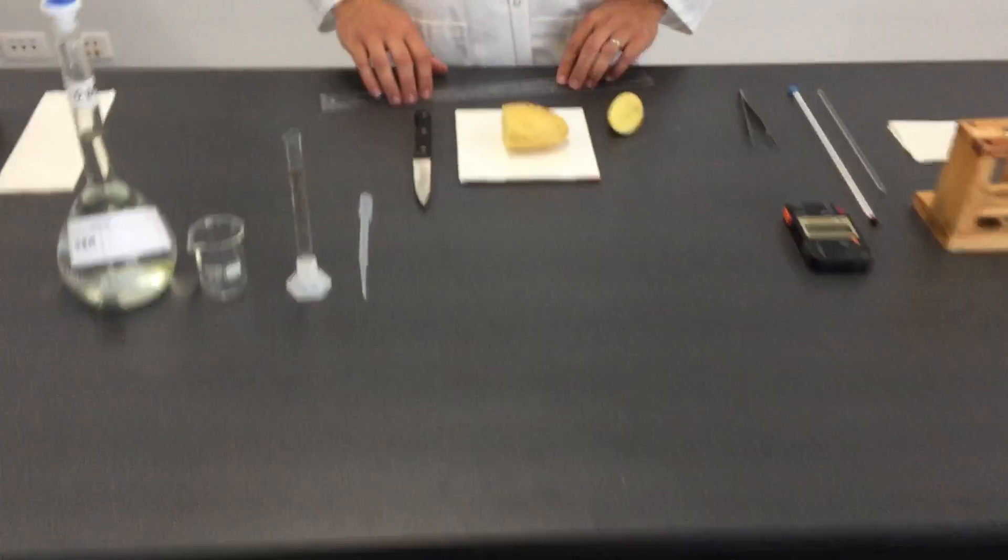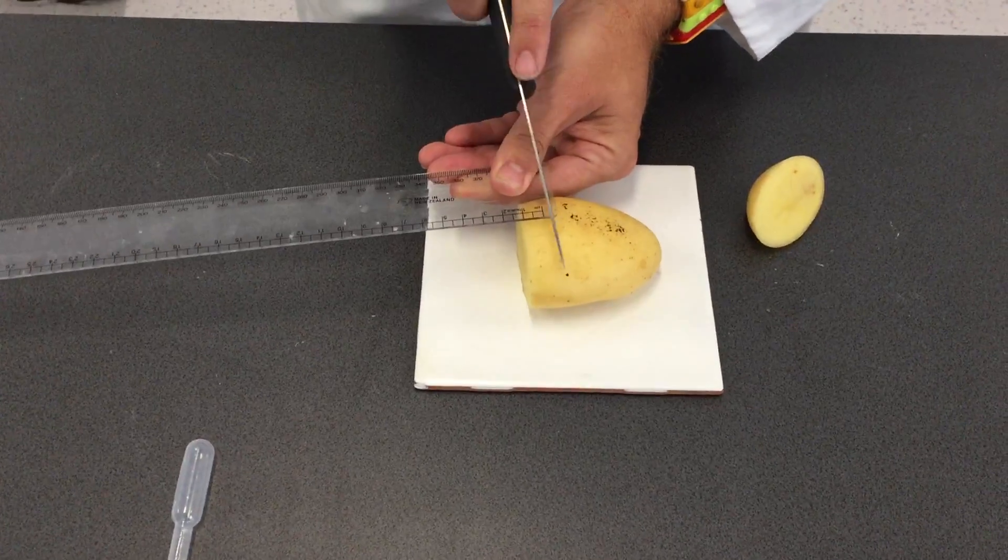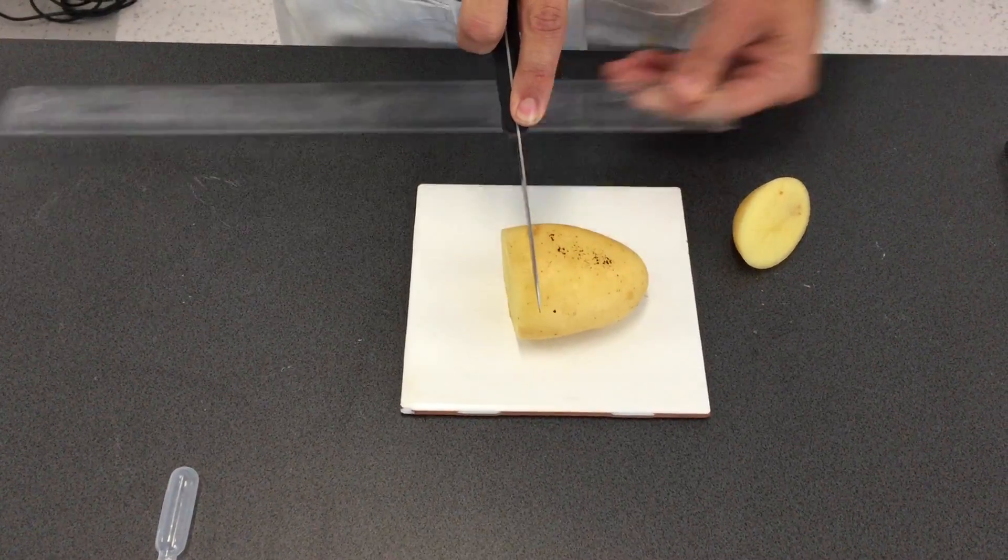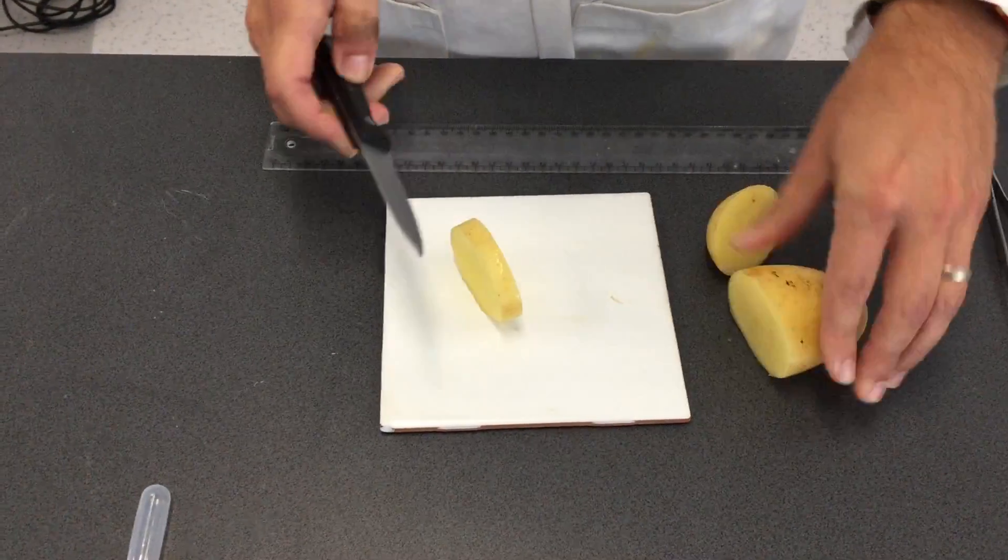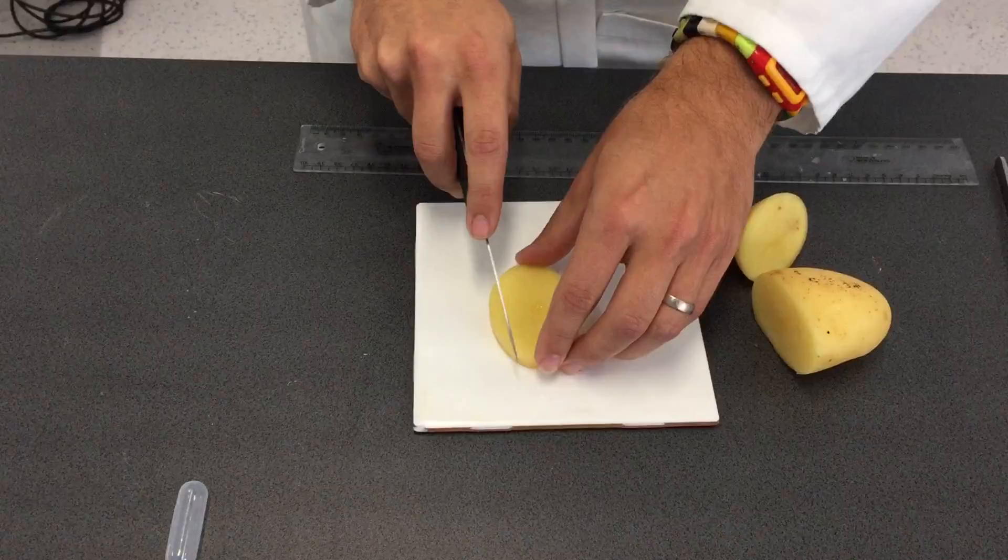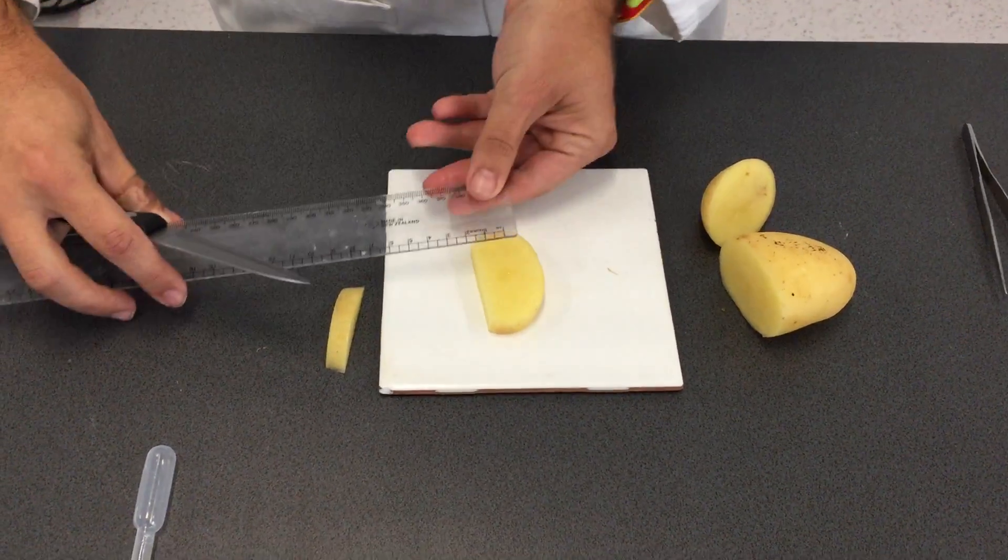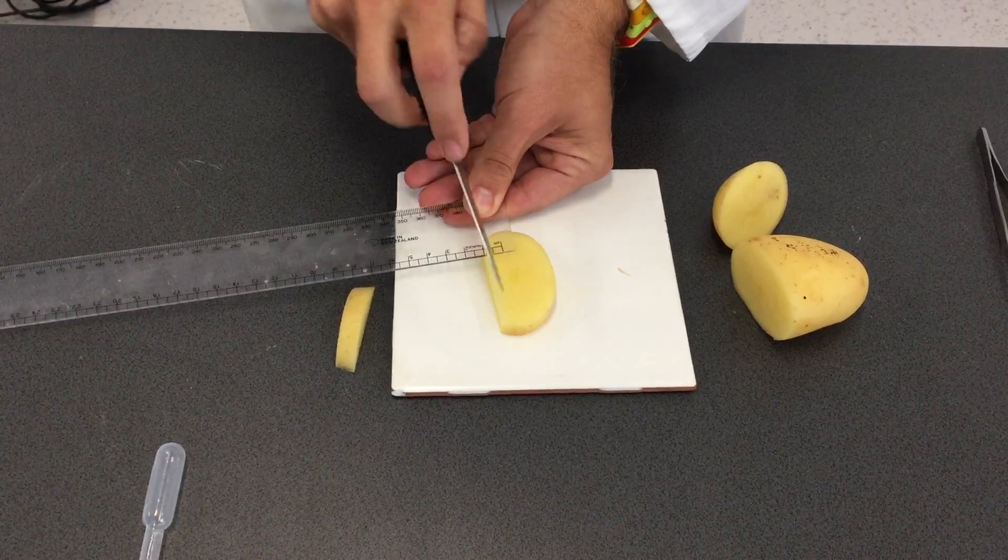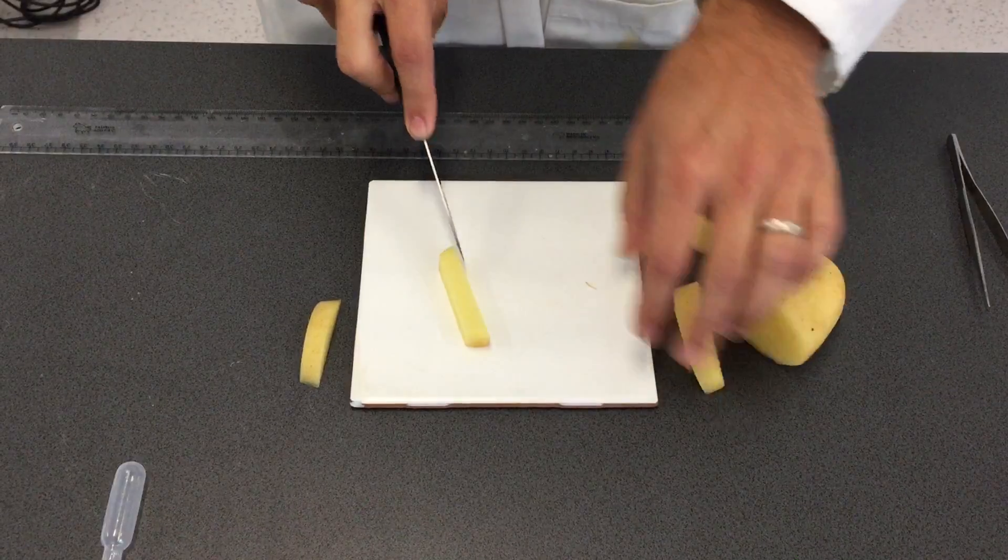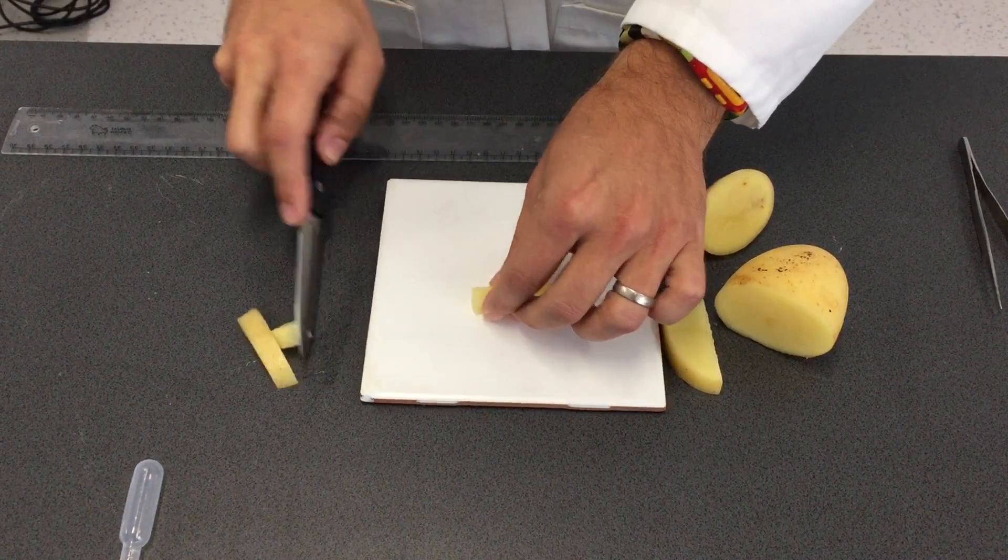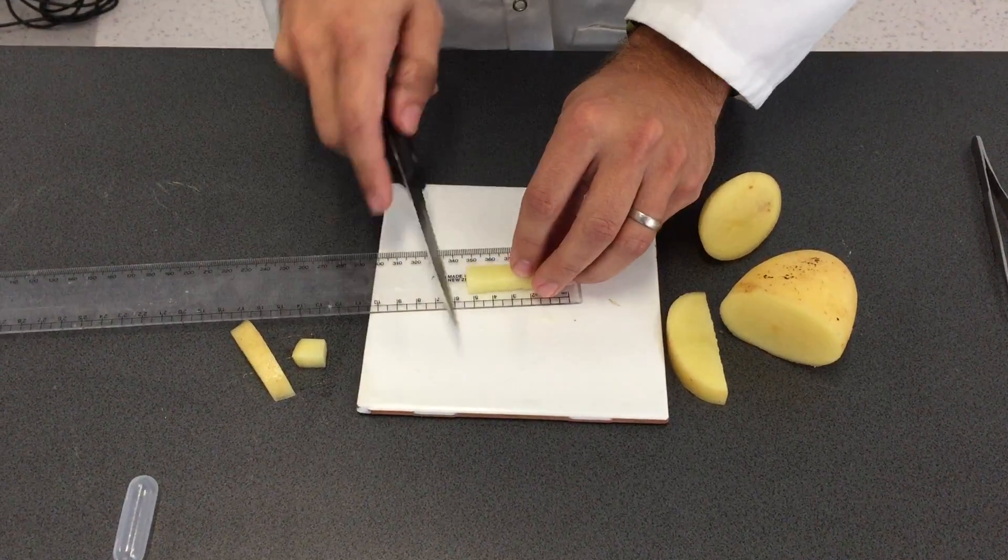So I cut the end off already. The process here would be to measure one centimeter and mark that using the knife, and then from there get an even parallel slice. Again we can slice that, then measure to get another even one centimeter slice. And now three pieces that are one centimeter cube.